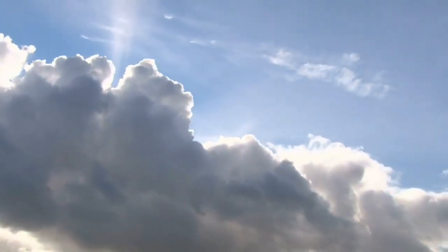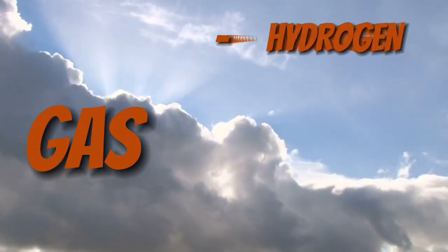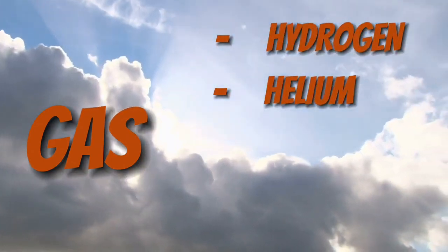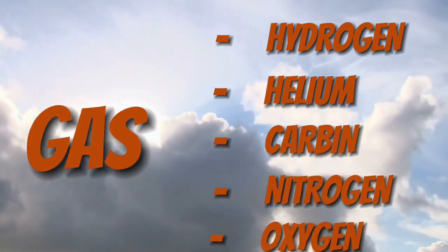The sun is composed of gas. The majority of this gas is hydrogen and helium, but there is also some carbon, nitrogen, and oxygen.